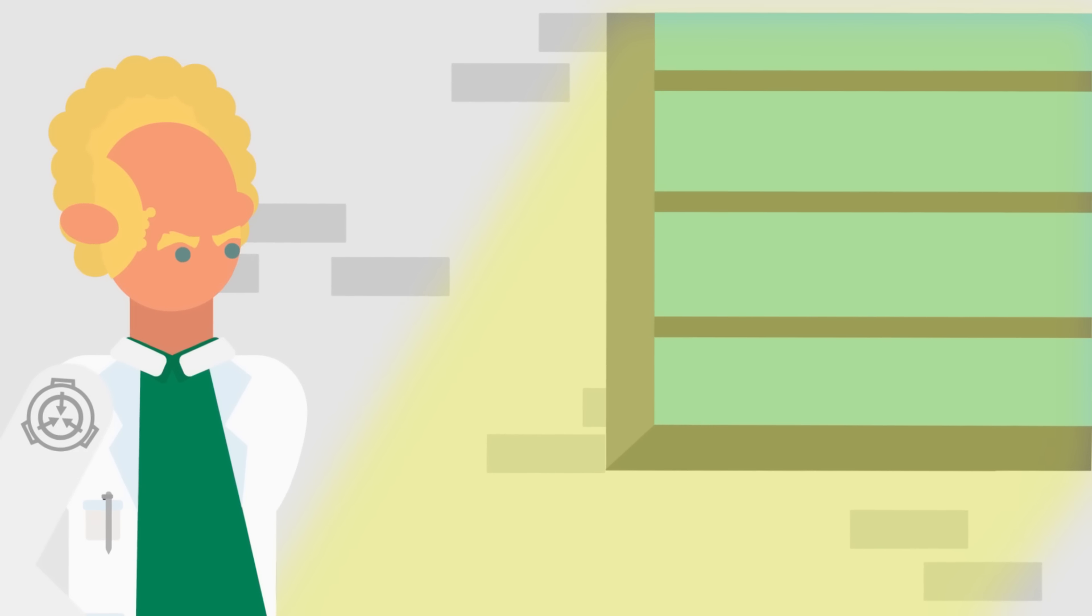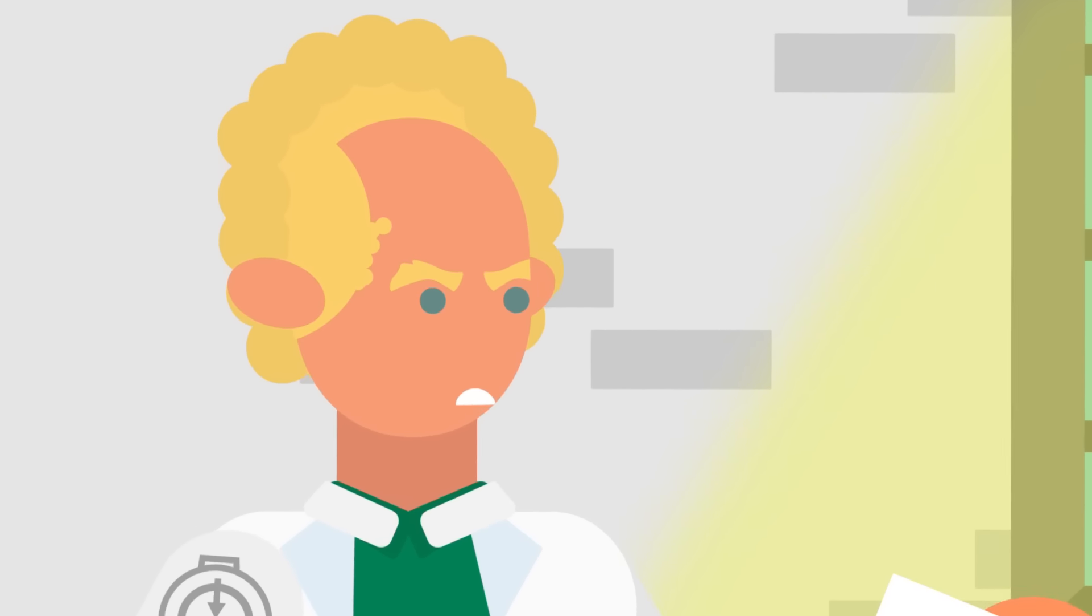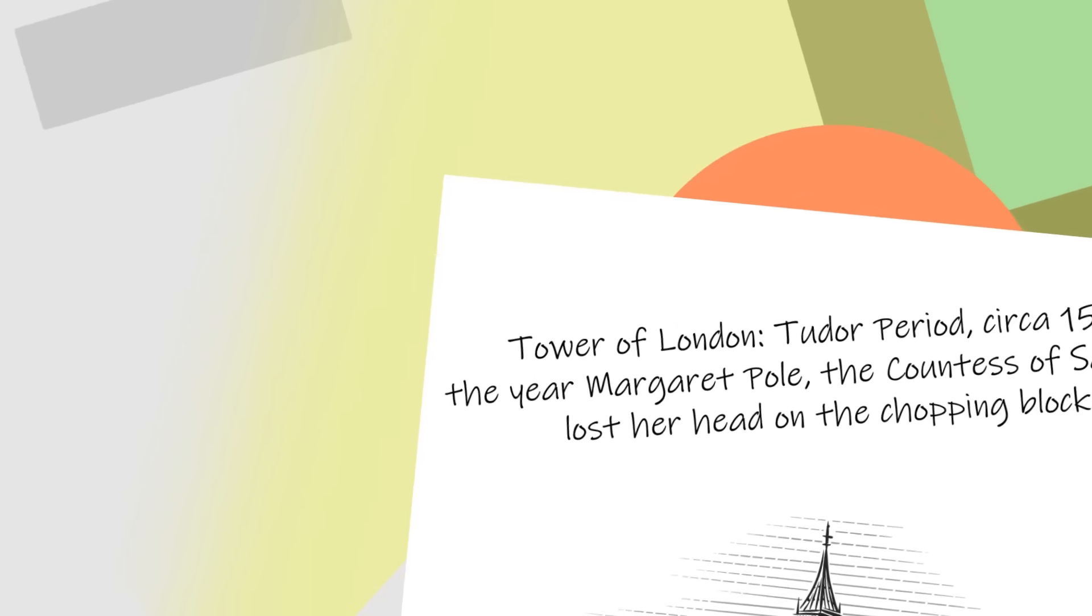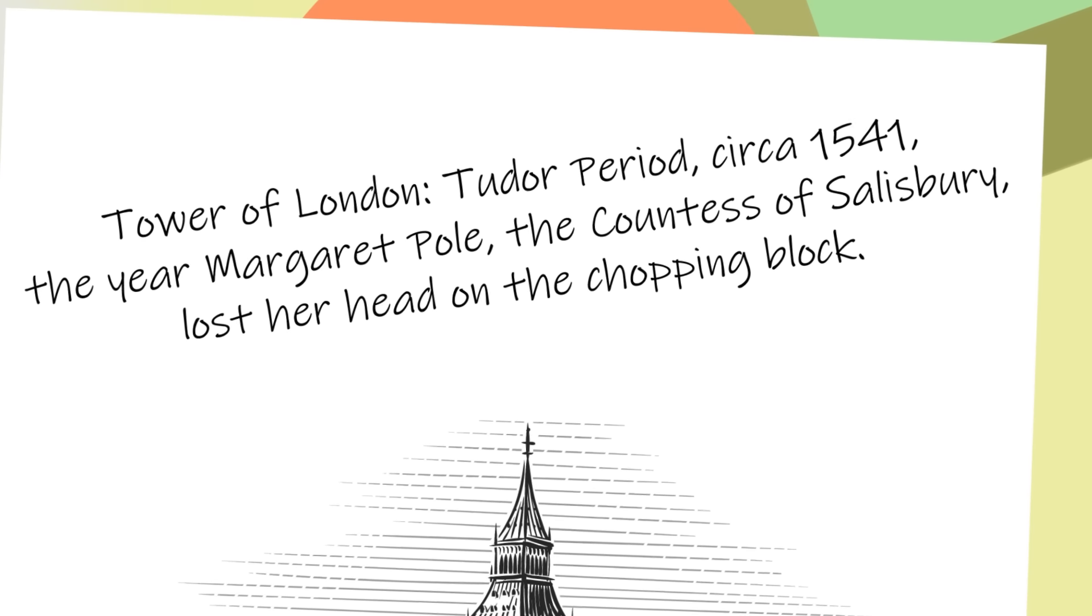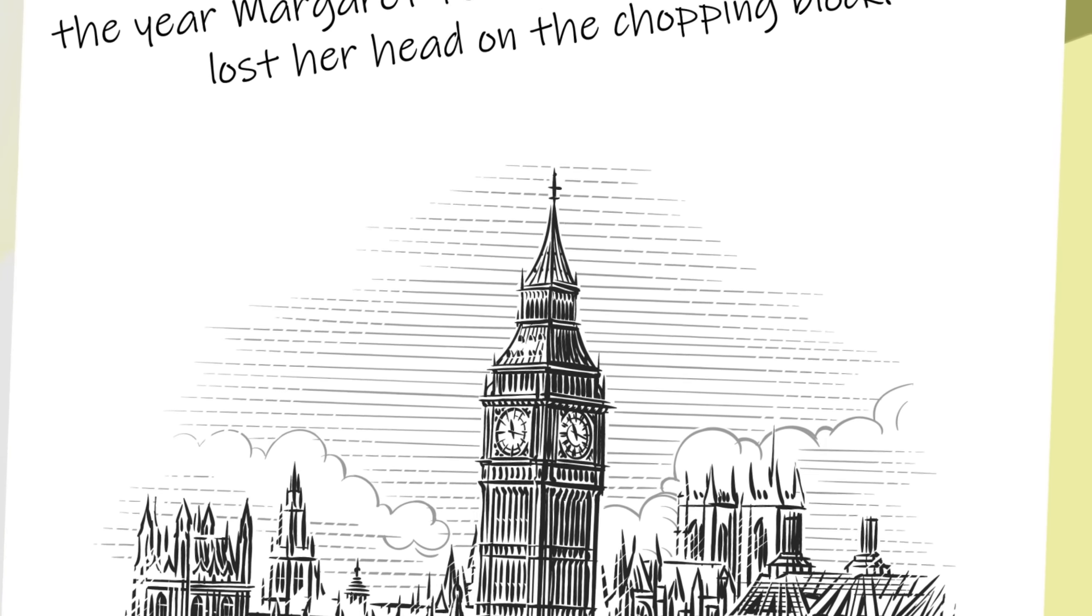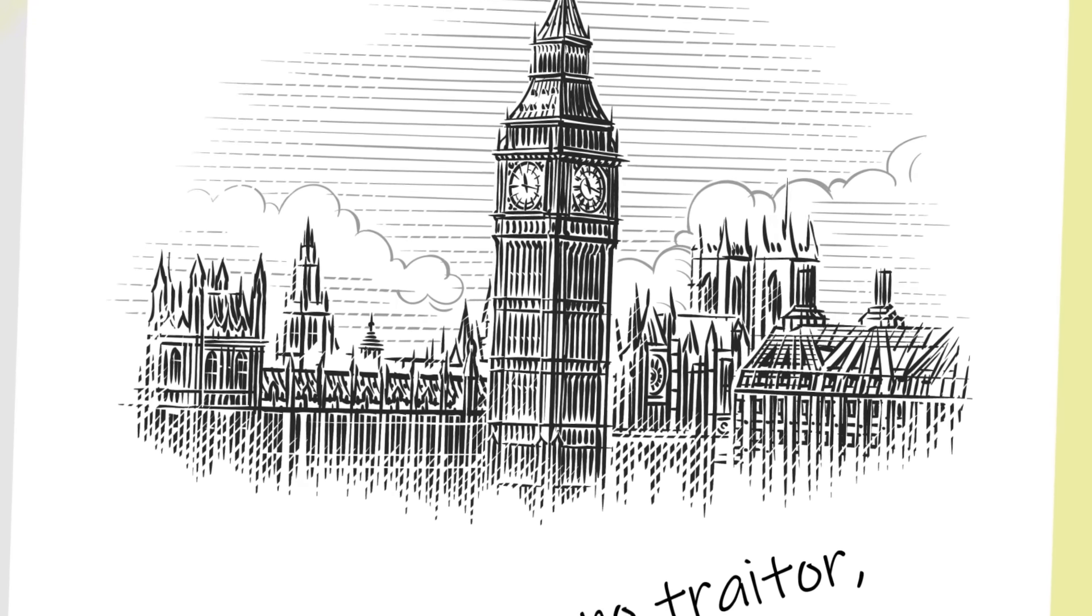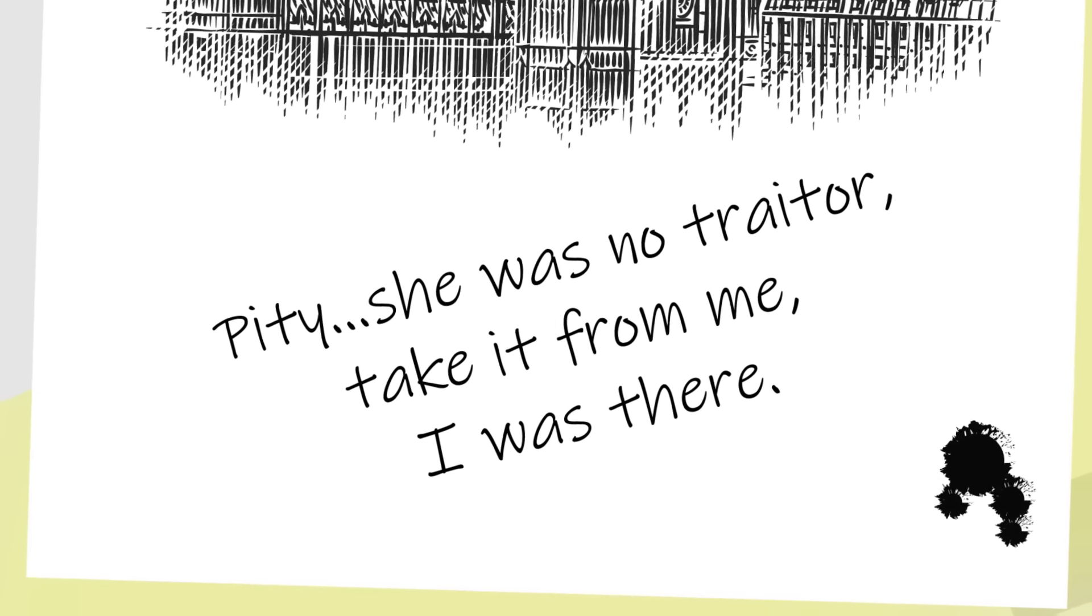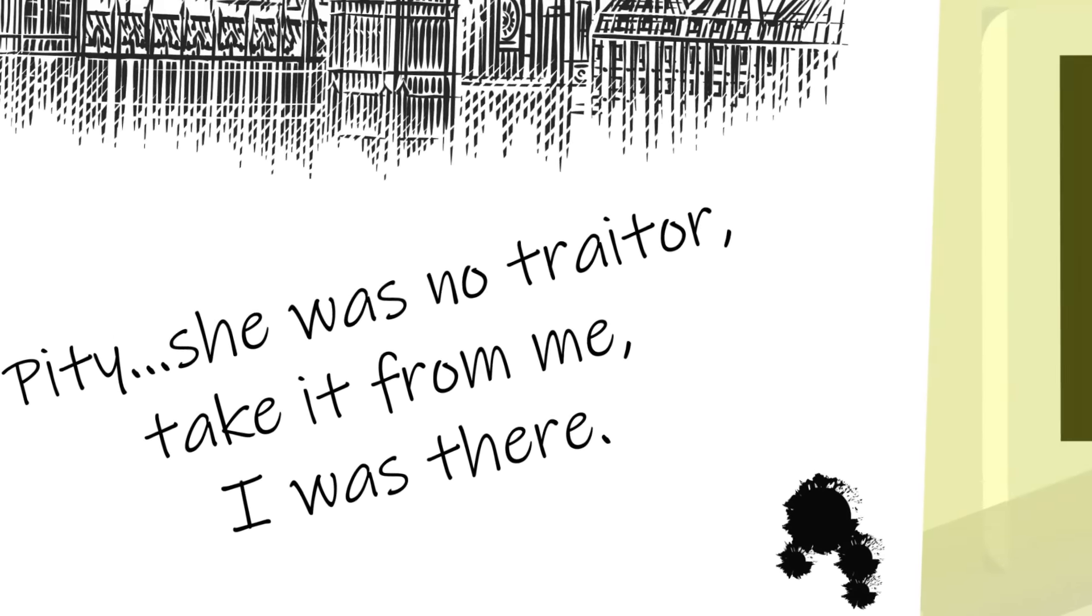One of the guys in the other room held the chimp's drawing up to the window. It was a perfect sketch of the Tower of London, intricate and brilliant. Above the sketch was the title, Tower of London, Tudor Period, circa 1541. The year Margaret Pole, the Countess of Salisbury, lost her head on the chopping block. Underneath that, the chimp had written, Pity. She was no traitor. Take it from me. I was there. They didn't need to look at the heart rate monitor to see that I was shocked.